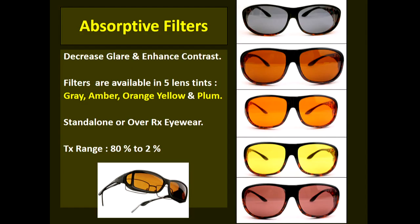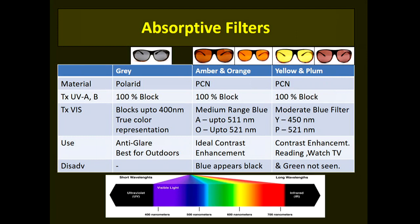Absorptive filters come in various shades ranging from grey to amber, orange, yellow, and plum. Grey and plum filters reduce overall light transmission and are ideal for cutting down glare. Amber, orange, and yellow filters also cut down blue light transmission and are ideal for contrast enhancement. Grey filters are Polaroid in nature; the rest are made of polycarbonate. All block ultraviolet A and B 100%. Grey is best for outdoor anti-glare protection; amber and orange for general contrast enhancement; yellow and plum for indoor contrast enhancement. The disadvantage of the amber, orange, yellow, and plum filters is that blue color appears black and green is not seen when wearing them.